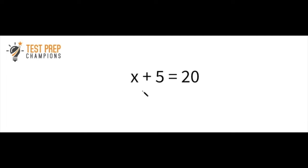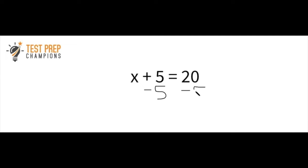We want to get the variable alone on one side of the equation. The variable is x, and a variable is just another word for an unknown. Since we have x plus 5, and we want to get x by itself, we want to do the opposite operation of addition, which is subtraction. Whatever we do to one side, we also have to do to the other side. So we have x plus 5 equals 20, we subtract 5 from both sides, and the answer is x equals 15.